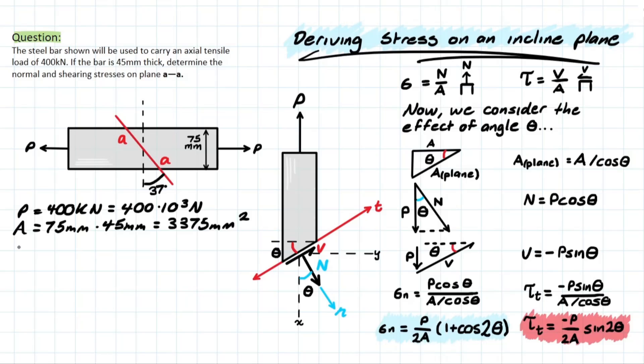Now we can pretty much plug and chug into these formulas. So we have the stress or the normal stress with respect to that n lowercase axis. We have 400 times 10 to the 3 for that P-value here over 2A, 2 times 3,375, and we have 1 plus cos, cos, open that bracket, 2 times the theta value that we have which is 37 degrees. Solving that we're going to be left with 75.6 MPa.